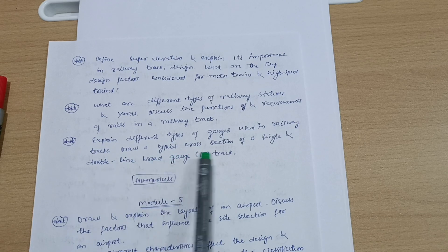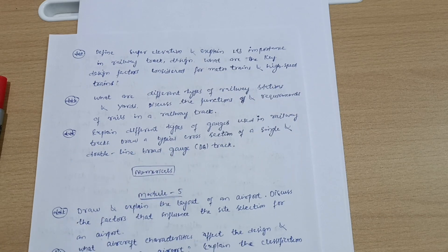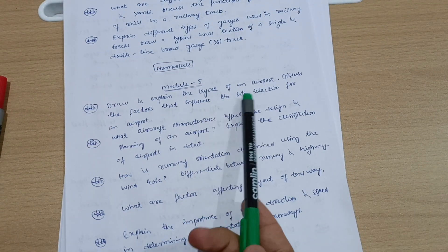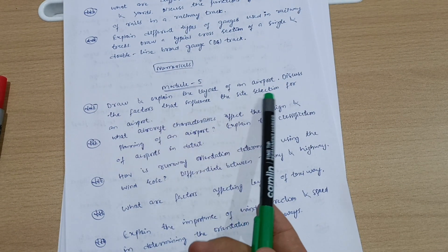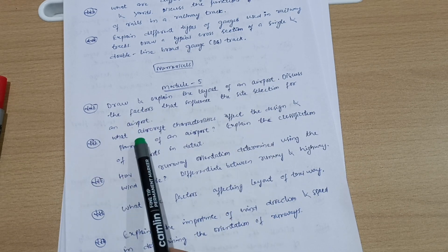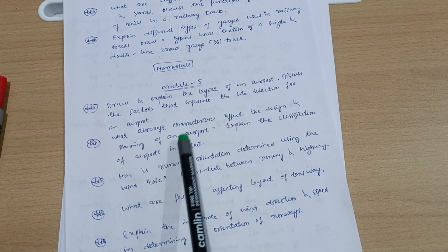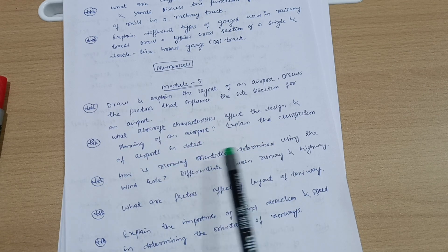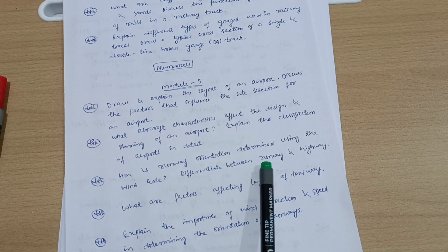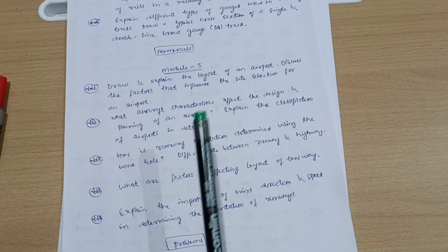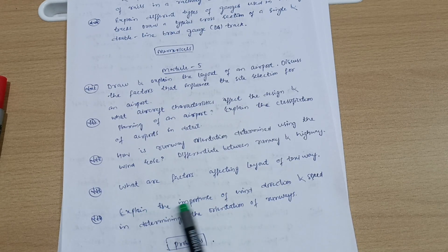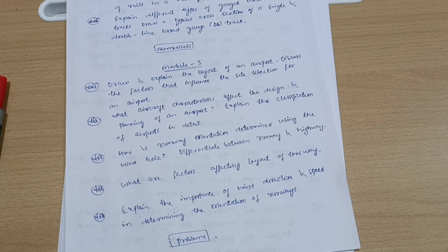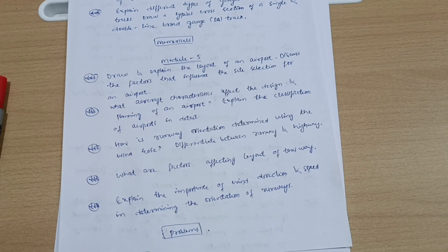Module fifth, we have here five questions. Draw and explain the layout of an airport. Discuss the factors that influence the site selection for an airport. What aircraft characteristics affect the design and planning of an airport? Explain the classifications of the airport in detail. How is runway orientation determined using the wind rose? Differentiate between runway and highway. What are factors affecting layout of taxiway? Explain the importance of wind direction and speed in determining the orientation of runway.